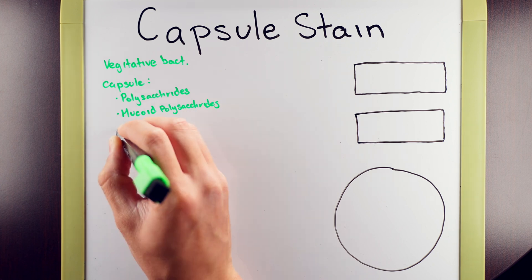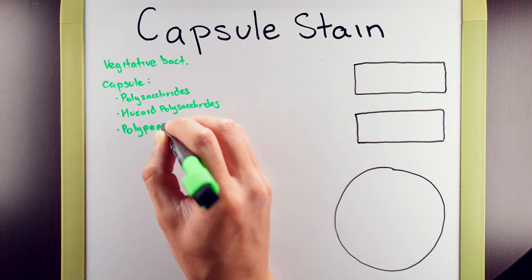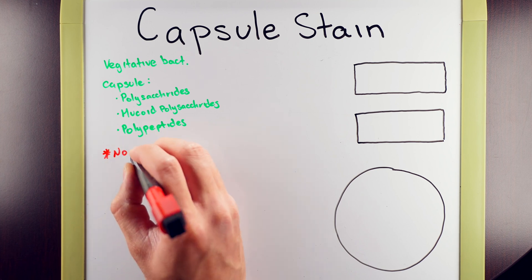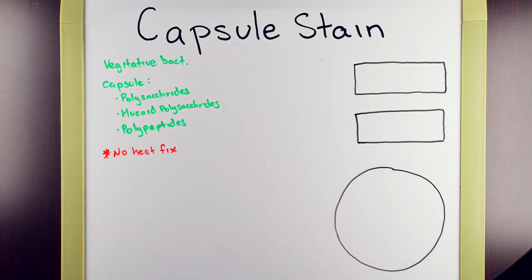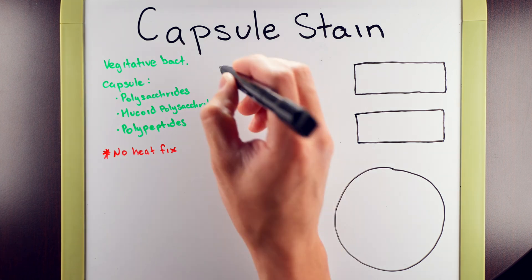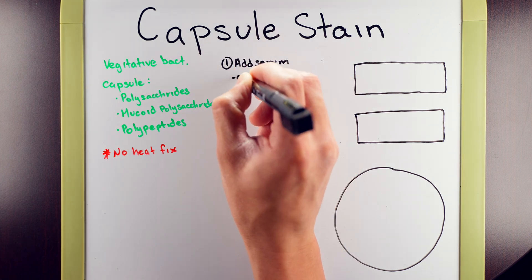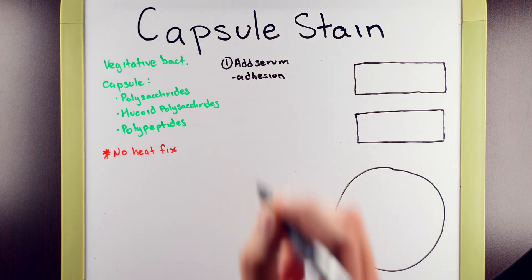The purpose of the capsule is to reduce the occurrence of phagocytosis of the bacteria in the host's immune system. Because these bacteria are in this vegetative state, we will not be using the heat fixation technique. We instead will be using a serum to adhere the bacteria onto the slide that will supplement our heat fixation.